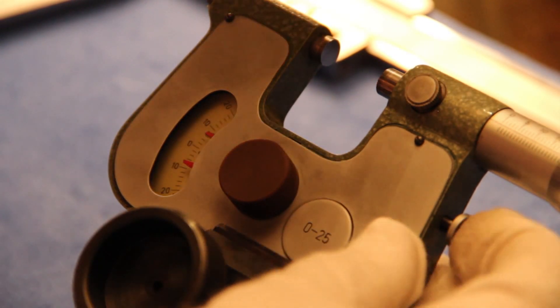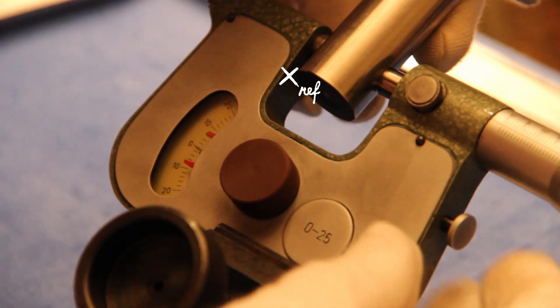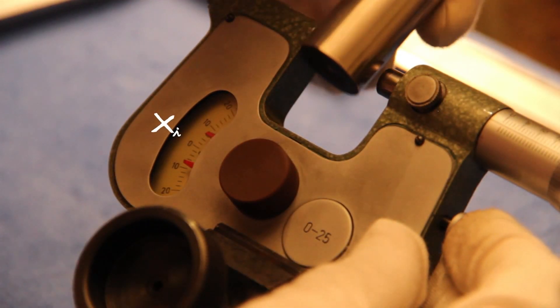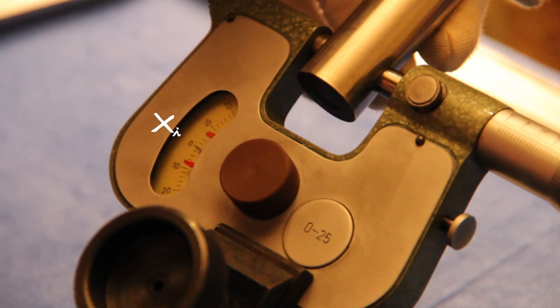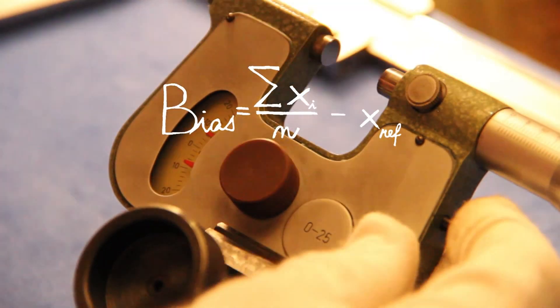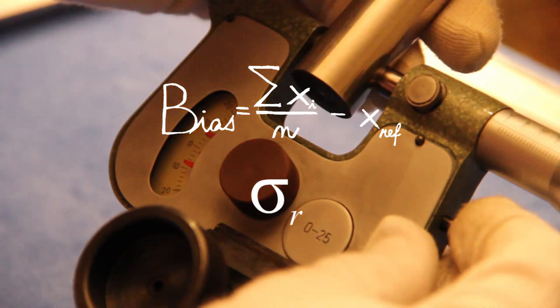Choose one part or a master of a known dimension that will be used as a reference value and have an appraiser to measure the part repeatedly, at least 10 times. Calculate the average bias and the standard deviation of the repeated measurements.